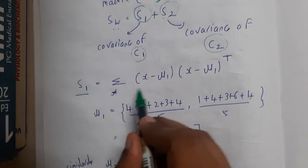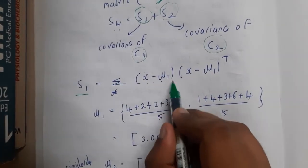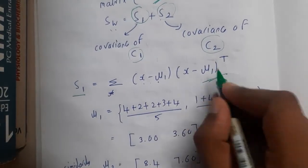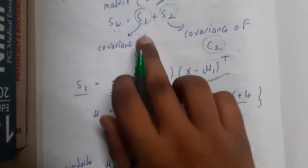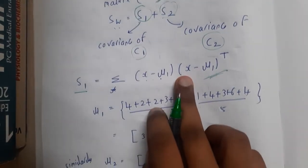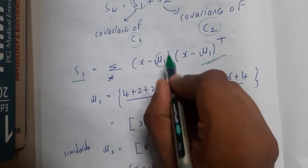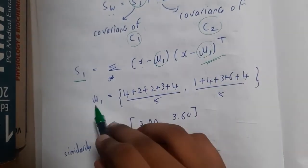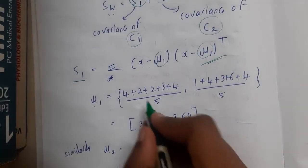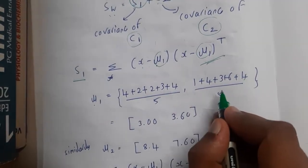Basically, S1 is equal to sigma (x - μ1)(x - μ1)^T. It is always better to use these formulas. This is a better approach or easy approach. Firstly, you need to know μ1. So to know those, we are calculating the averages. What is μ? It is nothing but mean. So we calculate the mean for the given data input.